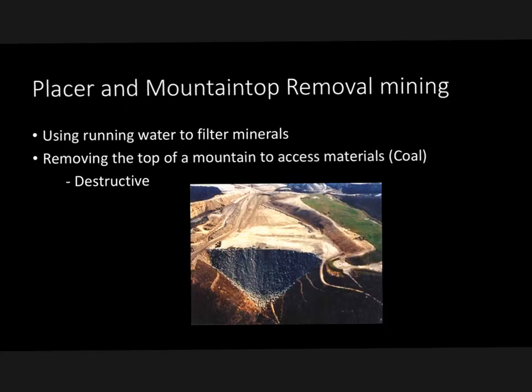Some other types of mining: we have placer and mountaintop removal mining. Placer mining is essentially using running water to filter minerals out. Mountaintop removal is, again, what it sounds like — cutting off the top of a mountain to access certain materials. Oftentimes this material is coal. Mountaintop removal is particularly destructive to ecosystems because you're literally just destroying mountains.